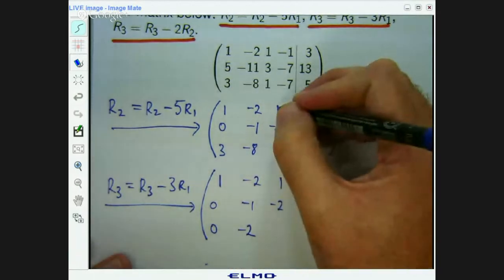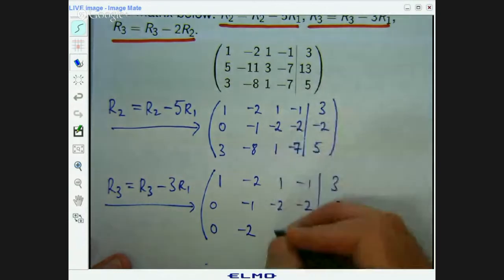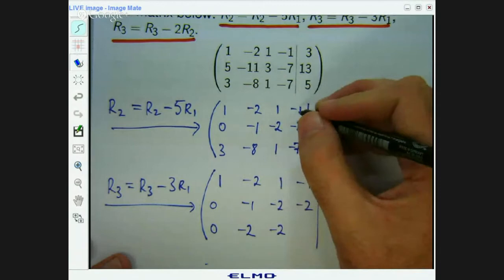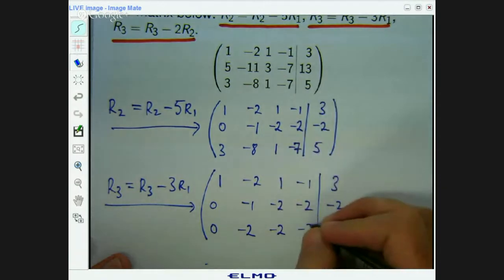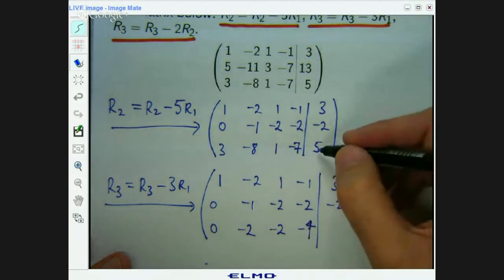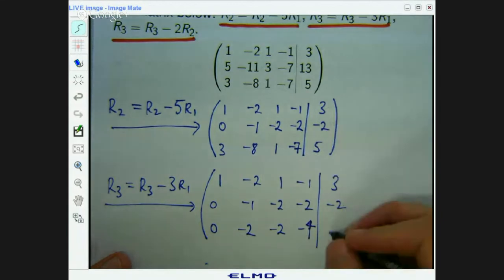1 minus 3 times 1. 1 minus 3, negative 2. Negative 7 minus 3 times negative 1. So that's negative 7 plus 4, plus 3, negative 4. And 5 minus 3 times 3, 5 minus 9, negative 4.